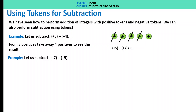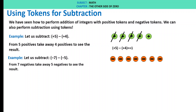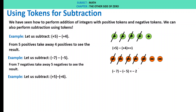Let us see another example: minus 7 minus of minus 5. We have minus 7 tokens here. From 7 negative tokens, take away 5 negatives to see the result. We take away 5 negatives, and 2 negatives are left. Therefore, minus 7 minus of minus 5 is minus 2.